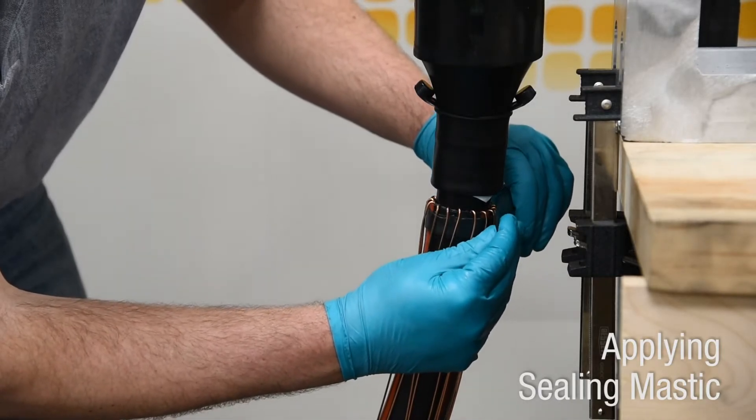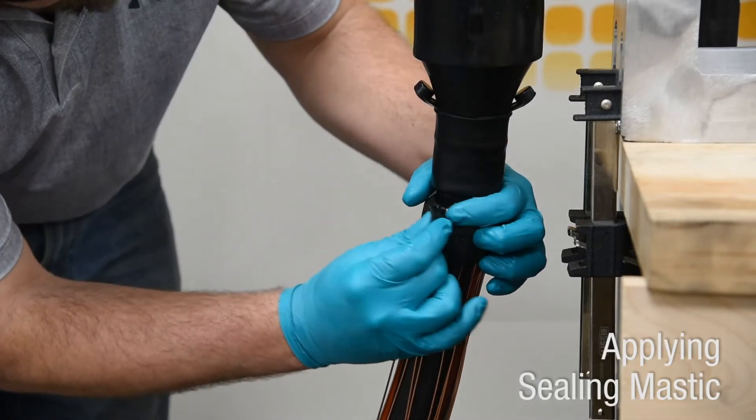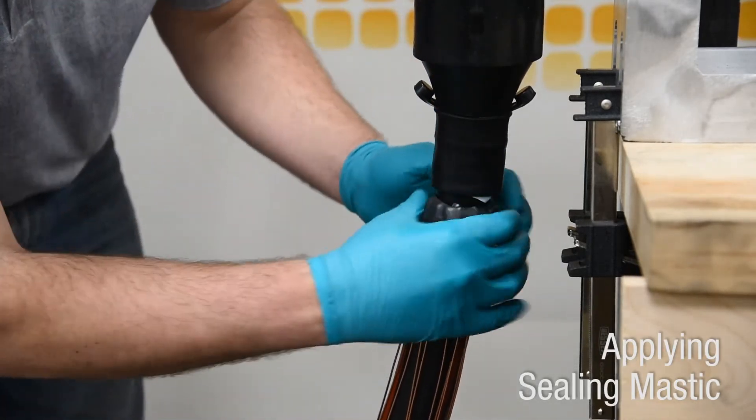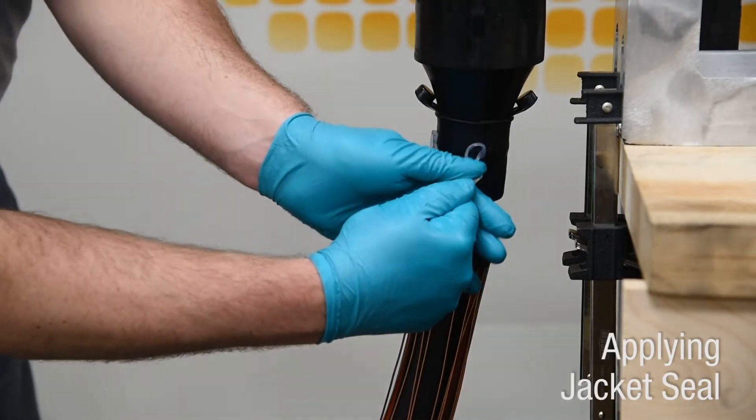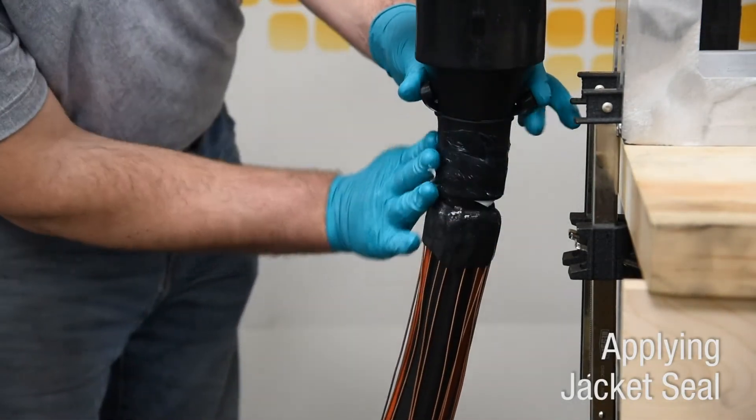Apply sealing mastic as close as possible to folded back jacket seal while maintaining complete overlap of previously applied jacket mastic. Apply grease over mastic and folded back rubber to assist in deploying jacket seal.